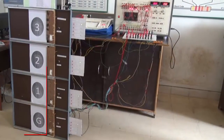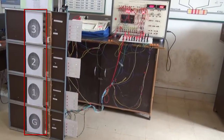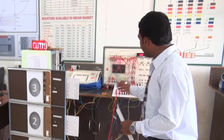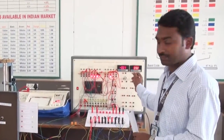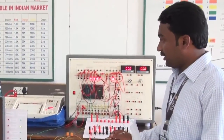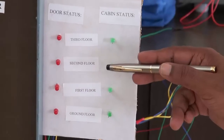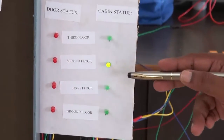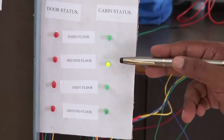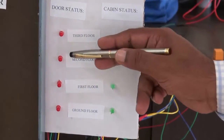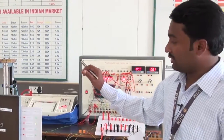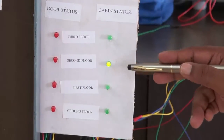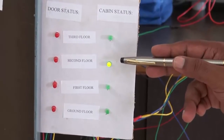Here we have a three-floor including ground-floor lift model. And this is the PLC — heart of the project — it is the controller. And this portion, you can see here, these lights are the indicators which will indicate the status of the lift. This green light shows exactly which floor the cabin is present at.